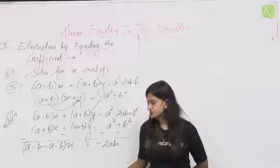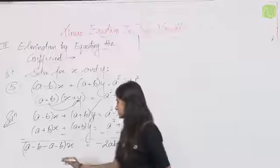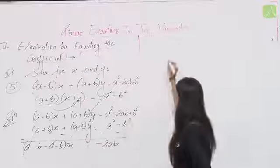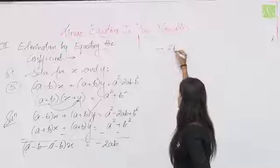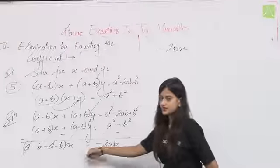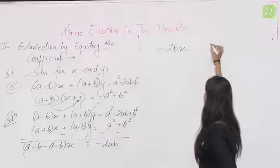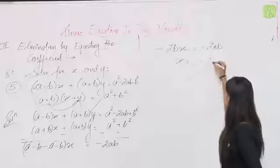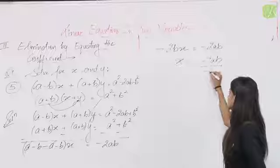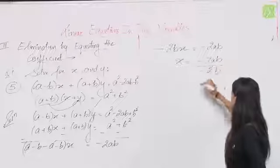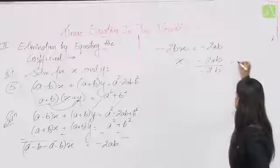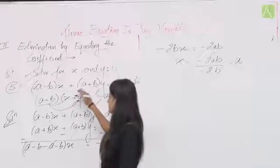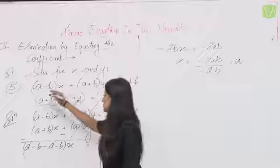Subtraction से: coefficient of x becomes (a−b)−(a+b) = −2b। RHS becomes −2ab − 2b² — wait transcript says −2ab. So −2bx = −2ab, x = a। अब x = a को first equation में put करते हैं।